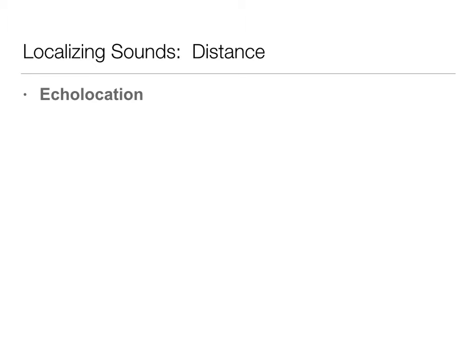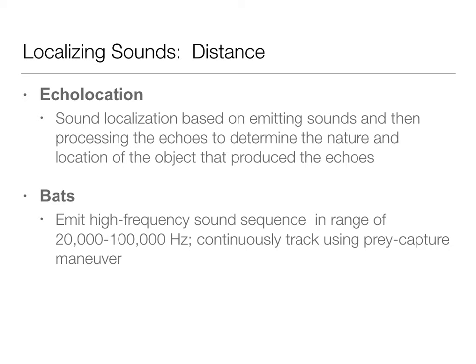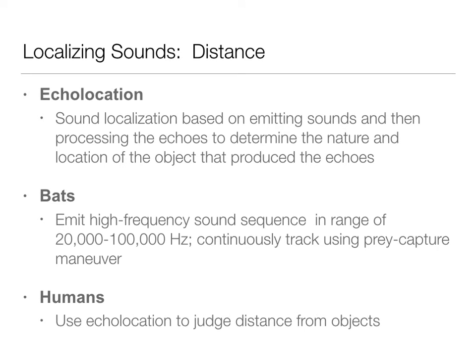Another way we perceive distance is echolocation. Bats and dolphins are the mammals we think do it most — echolocation is sound localization based on emitting sounds and processing the echoes to determine the nature of surroundings. Bats emit really high frequency sound and track it to determine where things are in darkness. Humans do this too, but just to judge distance from objects. We all use echolocation on a much lower level, but we're all still using it to help us judge distances.